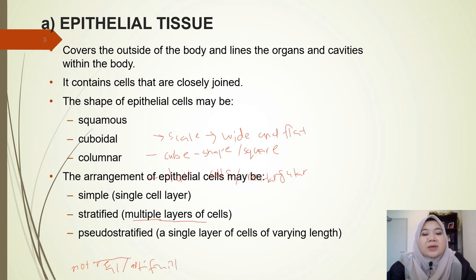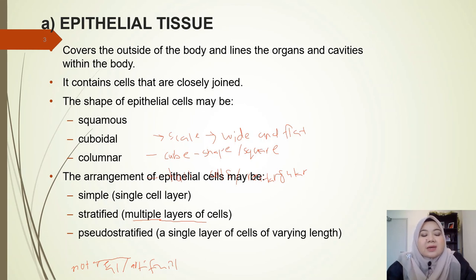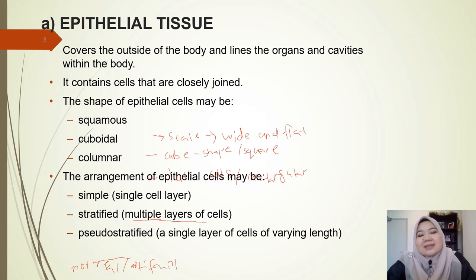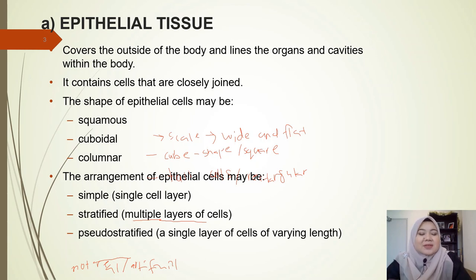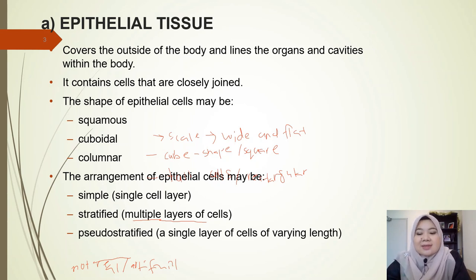Pseudo-stratified is a single layer of cells of varying length. We call it pseudo-stratified because it looks like it is stratified, but it's actually only a single cell layer. We're going to look at pseudo-stratified in more detail later.